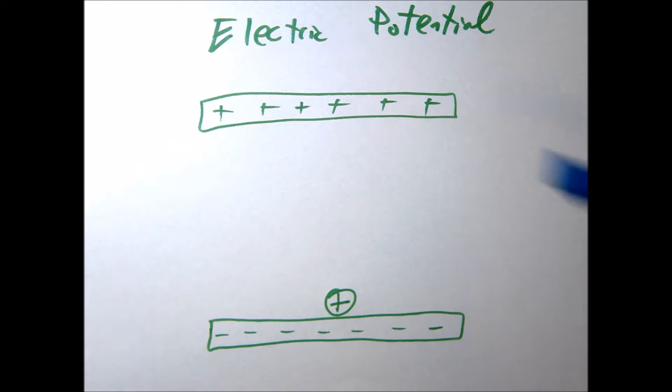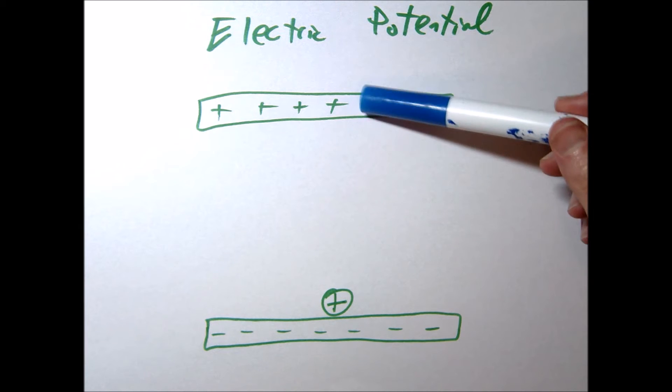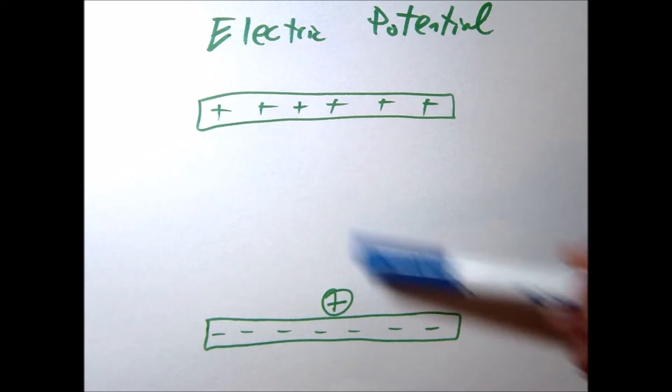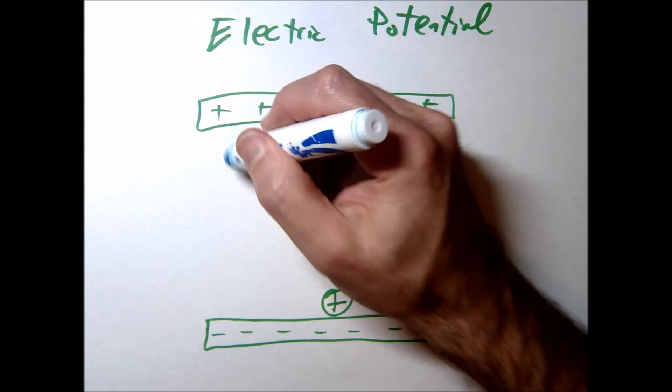So let's imagine that I have these two parallel plates. I'm going to charge one up positive, one up negative. Remember, there's going to be an electric field between these plates.